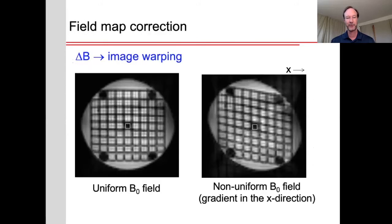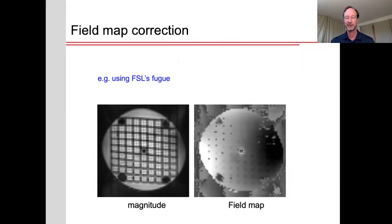Here's an example of a phantom with a plastic grid inside of it, where we've applied some non-uniformity in the x-direction, you can see that the image is distorted. However, if we acquire a separate field map, then we can use that field map to correct for these distortions, for example using FSL's FUGUE.